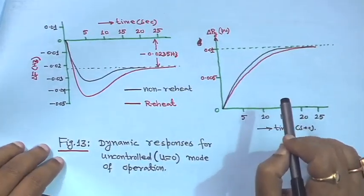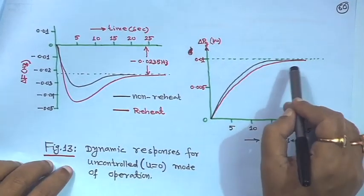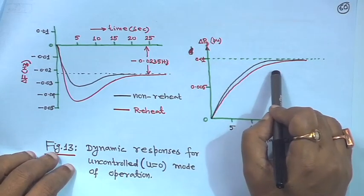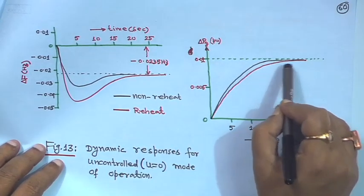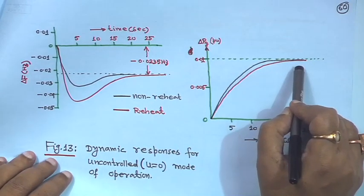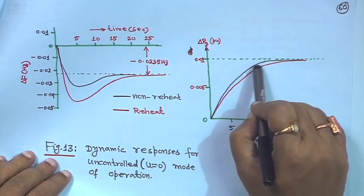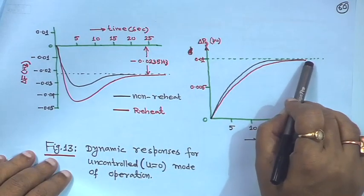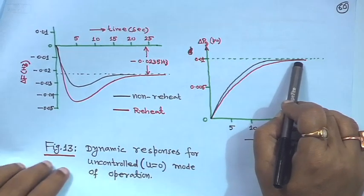Generation for the reheat type will take a little bit more time to settle; it is in uncontrolled mode. The value will be slightly less than 0.01 — about 0.0019 less. It will take slightly more time because the reheat time constant of 10 seconds makes it a little slower. Dynamic performance is slightly slower than the non-reheat type (the black curve is non-reheat).